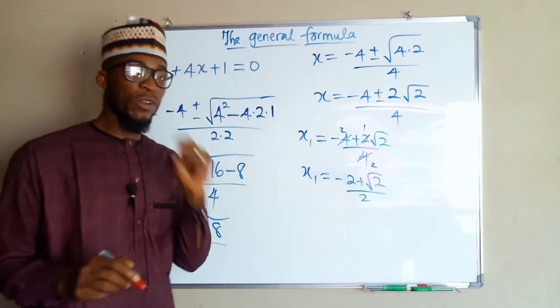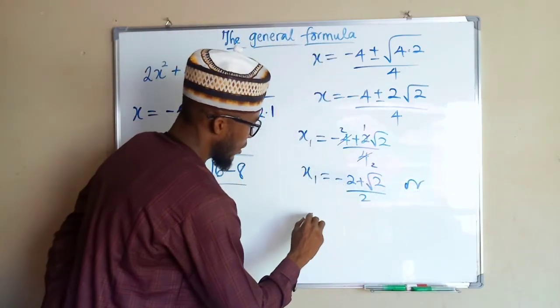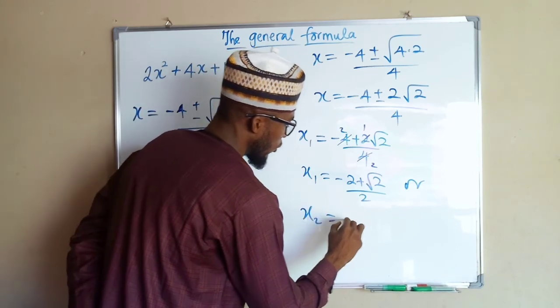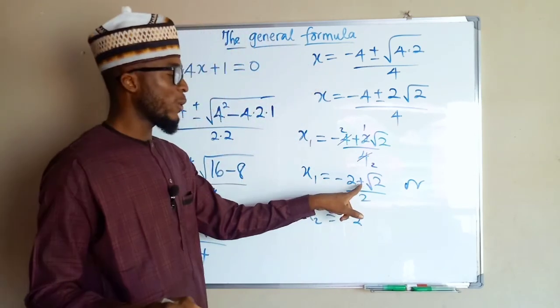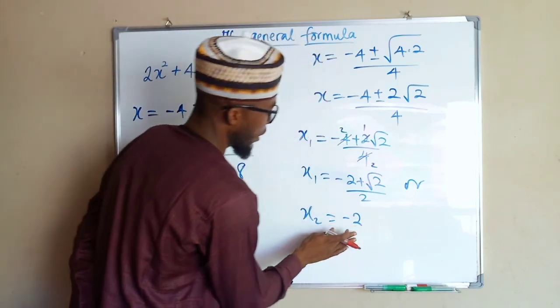This is one of the solutions we have. And the second one is x2, which is equal to minus 2. Instead of plus we use the other sign, which is negative.